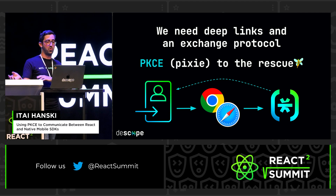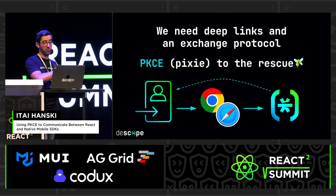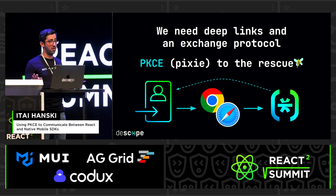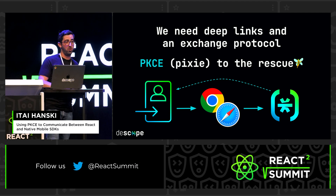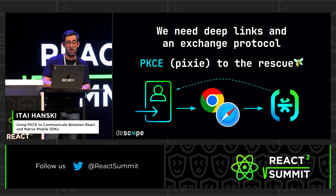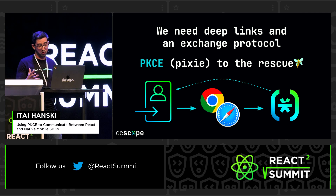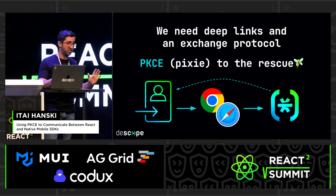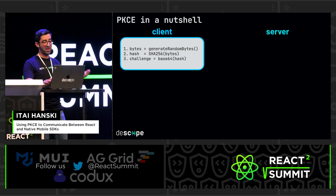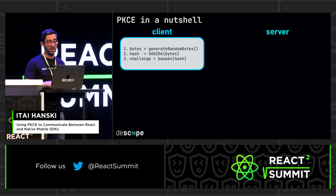Now we have a way to get back into our native code, but we can't simply send the session on a redirect URL because that's completely insecure. We need some form of exchange protocol in place. That's where PKCE comes in. PKCE — Proof Key Code Exchange — is a nice protocol. You can implement it any time you need it; it's kind of geared towards mobile but not necessarily so. I'm going to go over the PKCE principles in general so we understand it, and then I'll show you how we used it to get flows running on our native application.